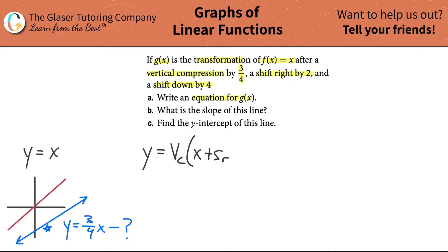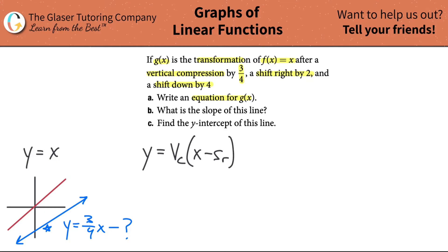What happens if the problem said shift to the left instead of to the right? The only thing that changes is this becomes a positive value. You might say that doesn't make sense — when you move to the right, isn't it positive? It works counterintuitive to how we actually think. The last piece is going to be minus the shift down.